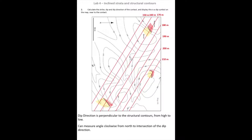If strike is parallel to the structural contours, then dip direction is perpendicular to the structural contours and points in the direction from high to low. A line perpendicular to the structural contours going from high values — say 180 — down to 150 gives us the direction of dip. Just as with strike, we put on a north arrow and count around clockwise from north to give us our dip direction of 210.